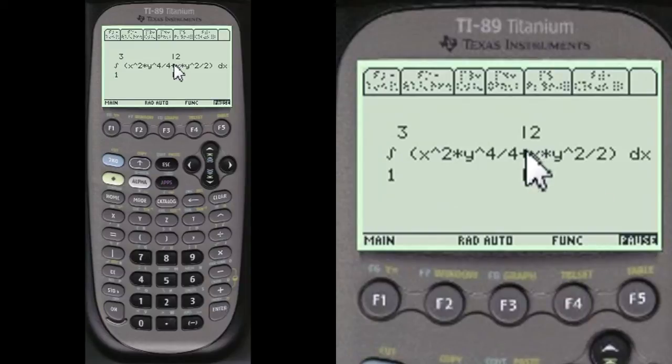So with respect to y, we integrate with respect to y. And here's the answer x squared times y to the fourth over 4 plus x times y squared over 2. And we're going to do that over the 0 and the 2 limits.